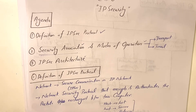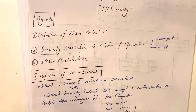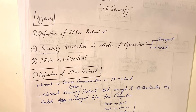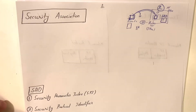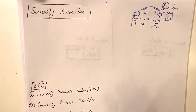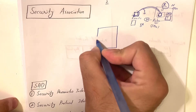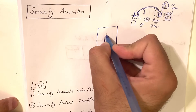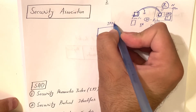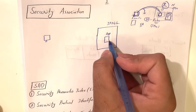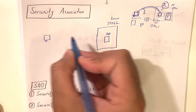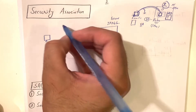Now we are clear about the IPsec definition and basic services. Let's look at what security association is, why it is important, and how it can be created. For example, let's say this is a secure network with a network application running inside it, and a user wants to access that application.